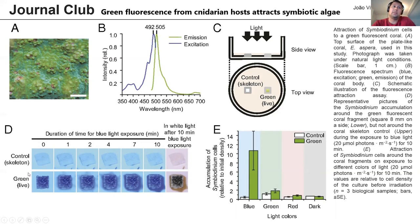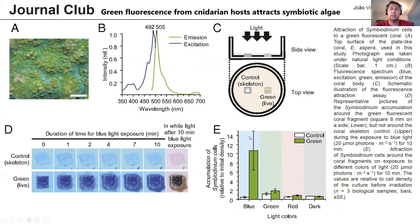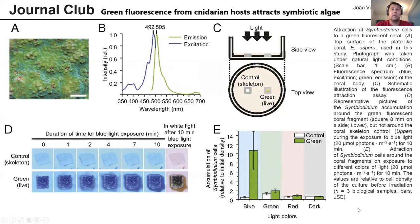They did an experiment exposing both the dead and the live coral reef to blue light, and observed that the algae cells accumulated around the live coral reef after some minutes. They tested different colors to show it was really the fluorescence attracting the algae cells. Using blue light — which excites the green fluorescent protein — the live coral showed phototaxis accumulation while the control showed almost none. In green, red, and dark conditions there was almost no difference between the live and dead coral.